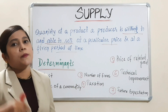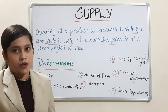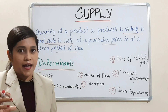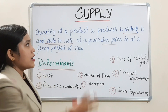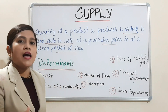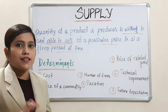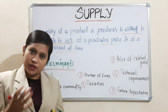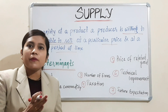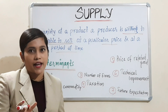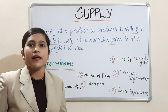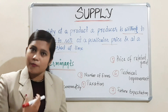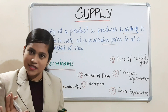That means you are producing something at a particular time, at a given period of time, at a given place, you are willing to sell and you are able to sell — that is your supply. Suppose I am a rice farmer. I am producing rice. At a certain period of time, at a given price, I will sell my rice. That is the supply. Getting the concept?